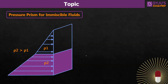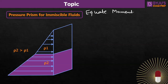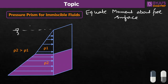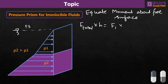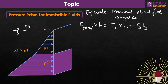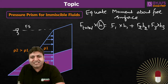We can also find the point of application of this hydrostatic force by equating moments about the free surface. Equating moments gives: F_total into H equals F1·H1 + F2·H2 + F3·H3. The total moment is the sum of individual moments. F1, F2, and F3 are already known, so we need to find the depths H1, H2, H3 of the centroids of each figure.